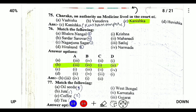Charaka, an authority on medicine, lived during the reign of Kanishka. Kanishka was the ruler of the Kushan Empire. Next, match the following dams: Bhakra Nangal Dam is located on the river Sutlej, Sardar Sarovar is located on the river Narmada, Hirakud Dam is located on the Mahanadi in Orissa.